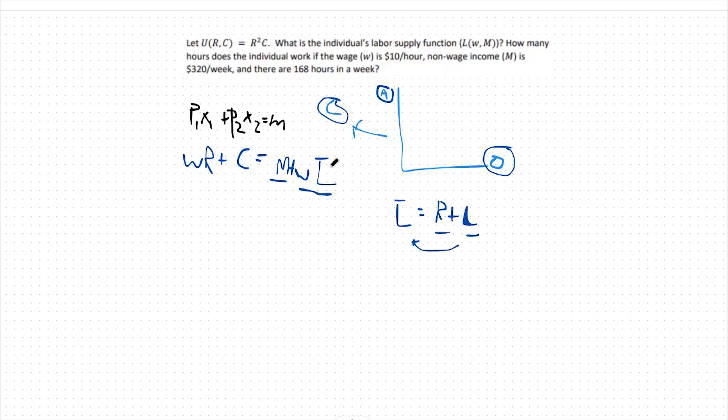Adding m and wL bar together gives us our total possible income that we can spend for recreation and consumption. Okay, with this framework in mind let's take a look at this specific question.